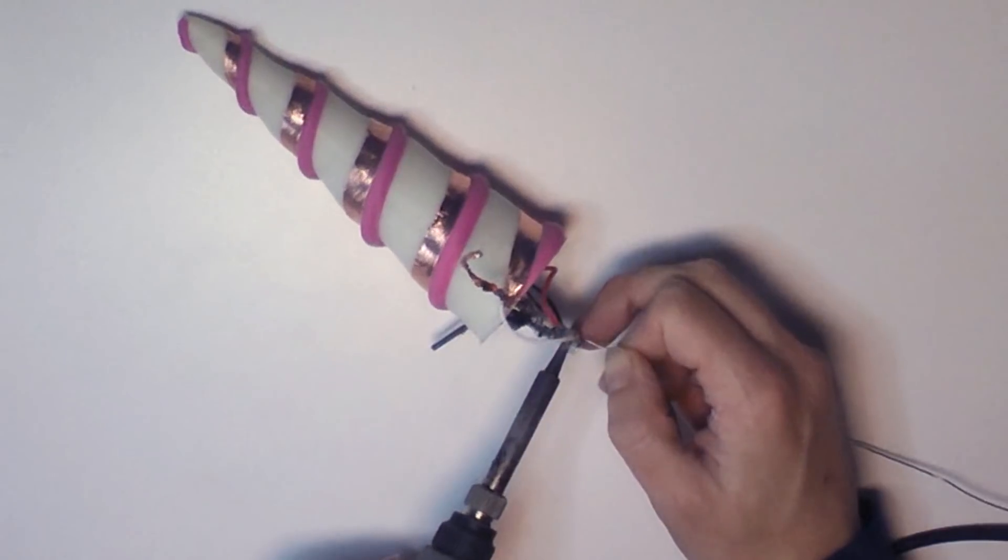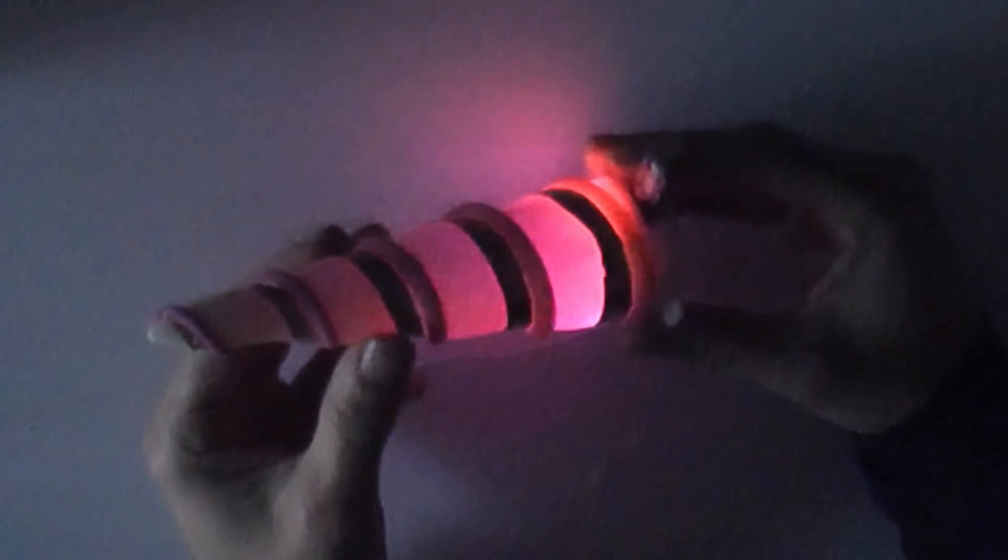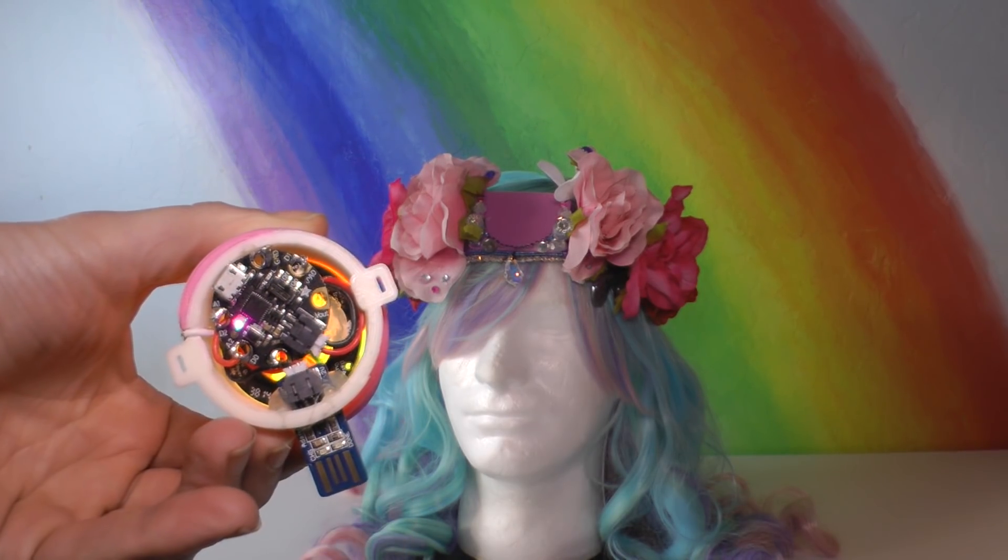Solder the copper tape tail to the Gemma and then set it inside the horn. Turn your horn on and slip it into the 3D printed base on your headdress or costume.